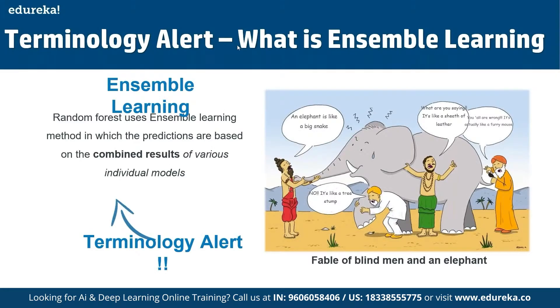Ensemble learning is what random forest uses — predictions are based on combined results of multiple individual models. An analogy: imagine multiple blind men describing an elephant. One says it's like a big snake, another says it's like a tree's tongue, another says it's like shed leather, and another says it's like a furry mouse. They all give different inputs. Combining these different parameters and results together is the essence of ensemble learning.